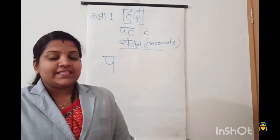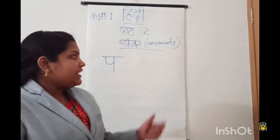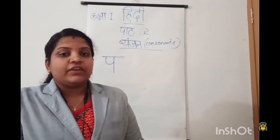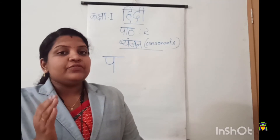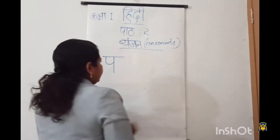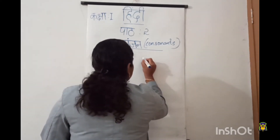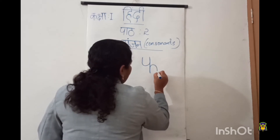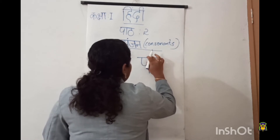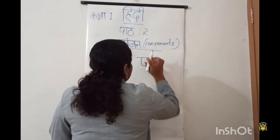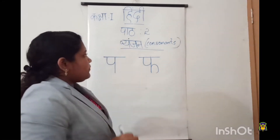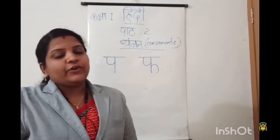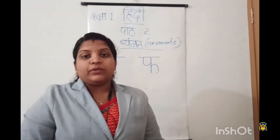So children say with me: pa — patang. Patang means kite. Right, very good! Then next we will learn the second letter of pa work. The next letter coming after pa is fa. Say with me: fa. One more time, louder — fa! Okay, let me write the letter.